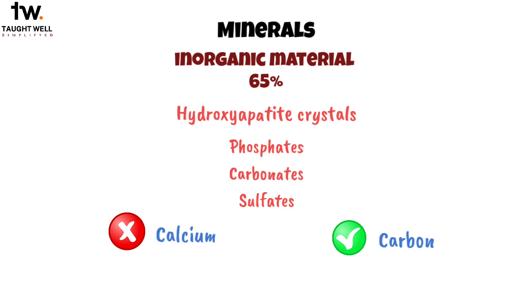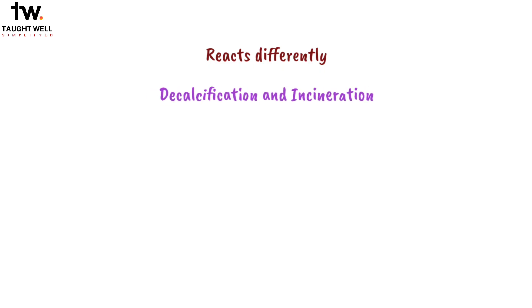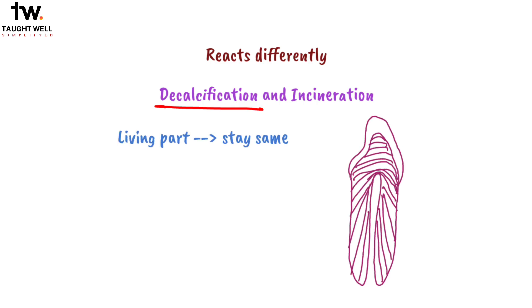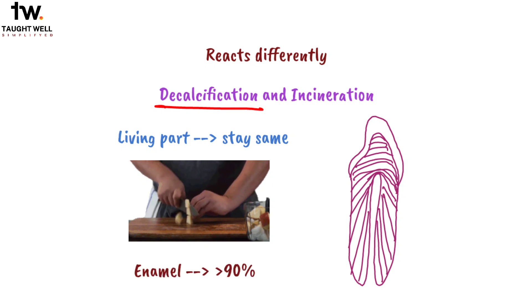Here's something interesting about dentin: it reacts differently to decalcification and incineration. If you decalcify dentin, the living parts stay the same and keep the shape of the dentin. That's why you can cut decalcified teeth and bones into thin slices to look at them under a microscope. But enamel, which is more than 90% mineral, disappears when it's decalcified.